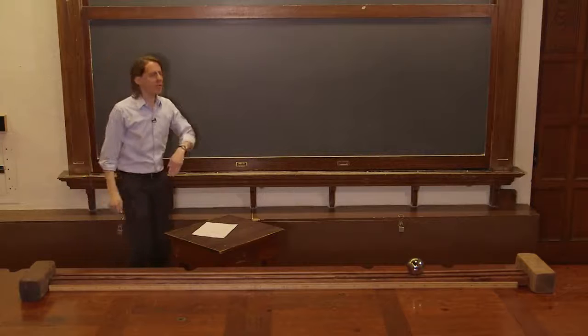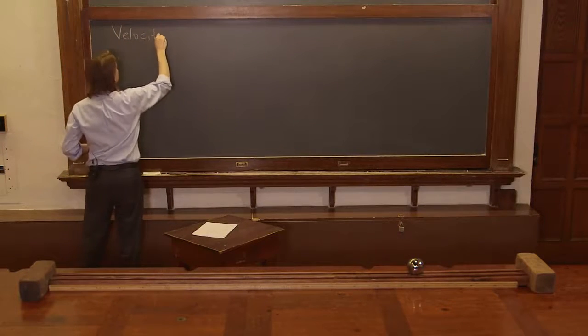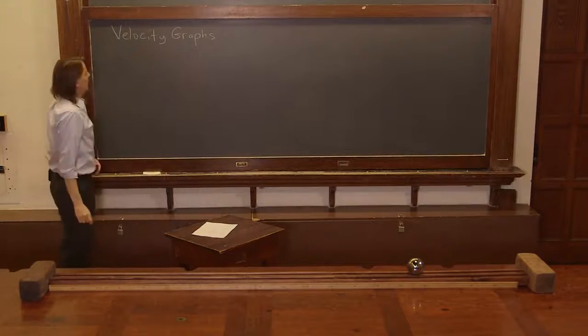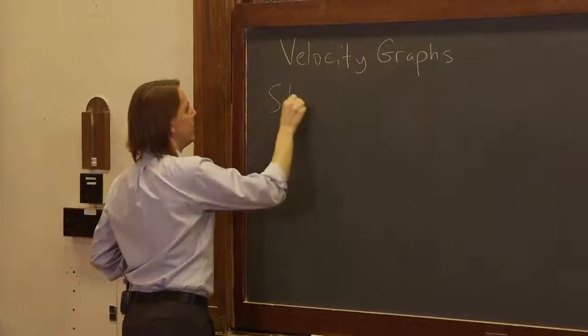We've done several position-time graphs. Now let's do some velocity graphs. Let's start with the simplest motion there is: the stationary ball.